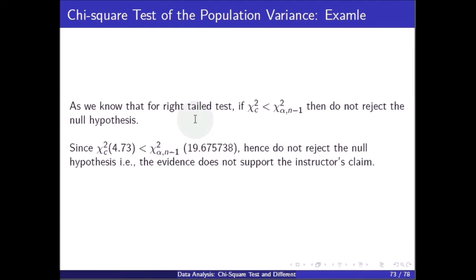For the right-tail test, if the calculated value is less than the table value chi square(alpha, n-1), we do not reject the null hypothesis. Since the calculated value of 4.73 is less than the table value of 19.675738, we do not reject the null hypothesis. Therefore, the evidence does not support the instructor's claim.